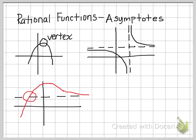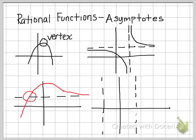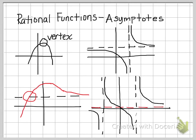A more typical case would be a rational function with a vertical asymptote here, another vertical asymptote here, and a horizontal asymptote at the x-axis shown in red. This rational function approaches the outer vertical asymptotes on each side and approaches vertically in the center. In the center it will cross the horizontal asymptote and then approach vertically — so just be careful about thinking an asymptote can't be crossed.